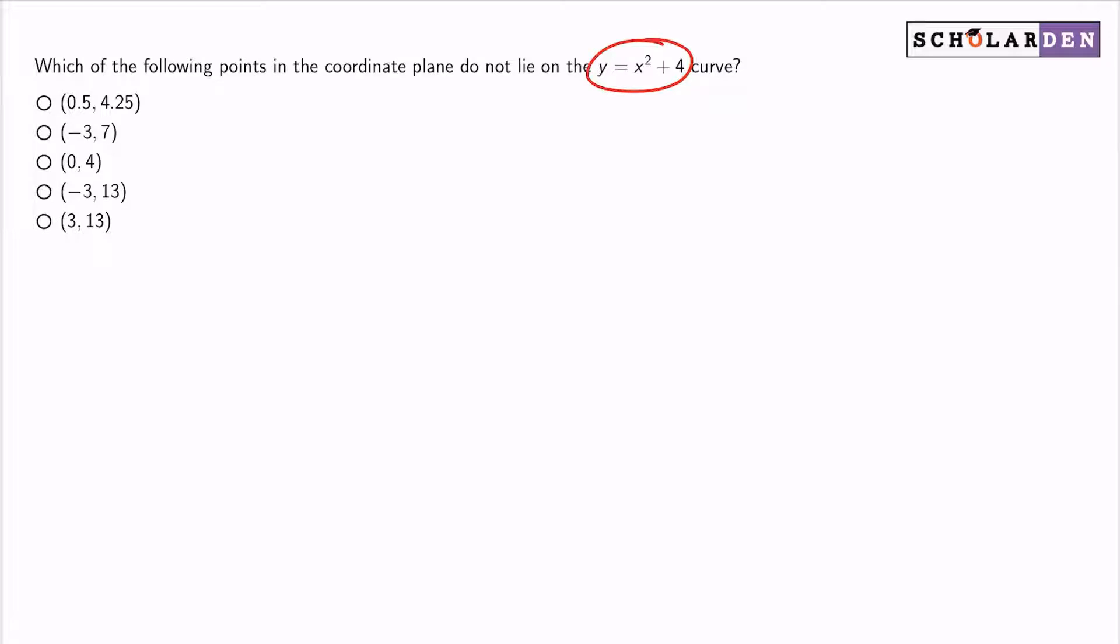And when we graph this, generally you're not going to see the same x value with two different y's. Generally, you're not going to see x equals 1 have this value and this value there because it wouldn't be a function.